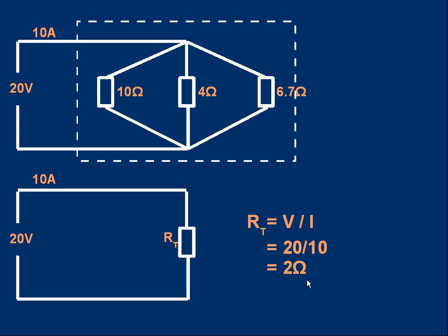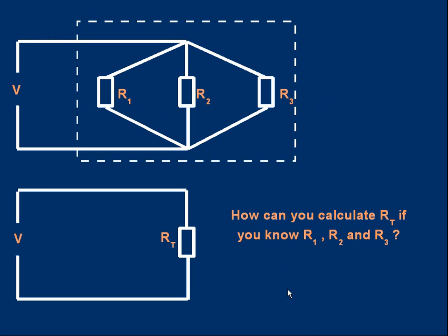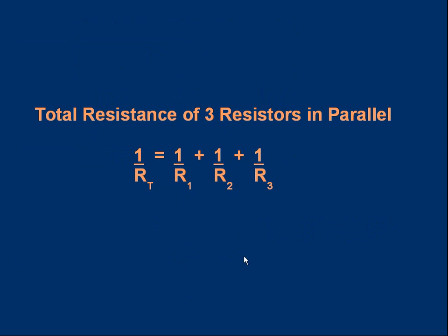RT is voltage divided by current: 20 volts divided by 10 amps = 2 ohms. So the total resistance of the three resistors — 10, 4, and 6.7 ohms — in parallel is 2 ohms. Now, if we don't know the voltages and currents but do know R1, R2, and R3, there is a formula: one over the total resistance equals one over R1 plus one over R2 plus one over R3.